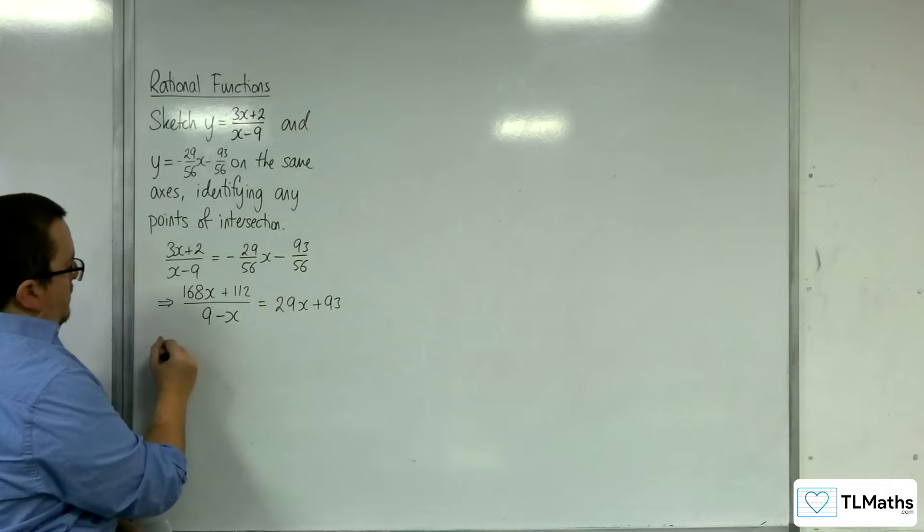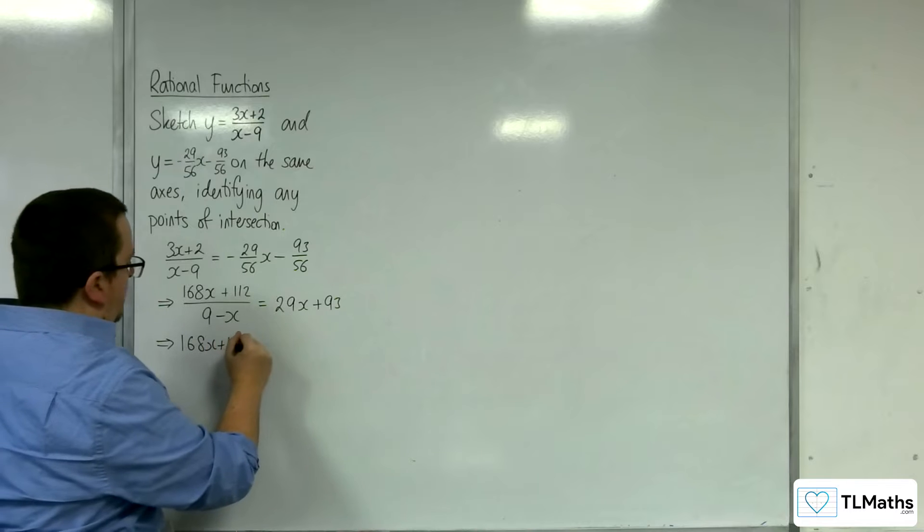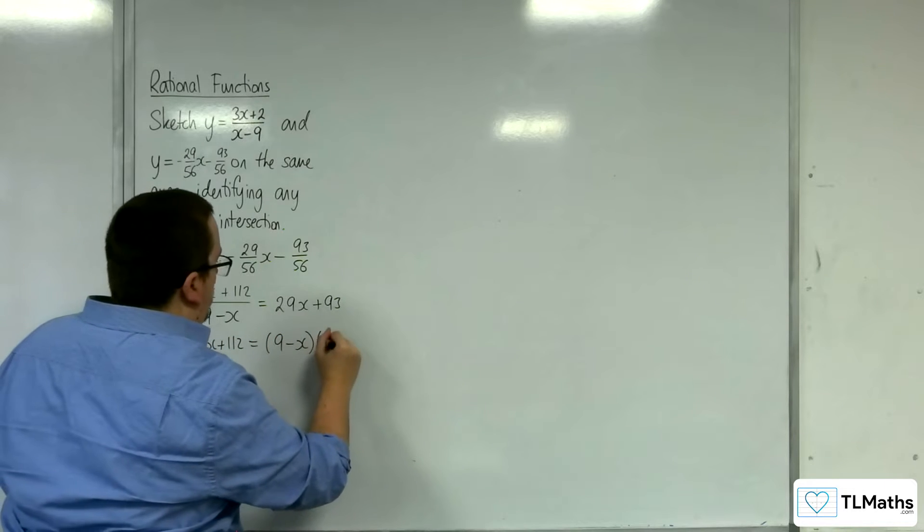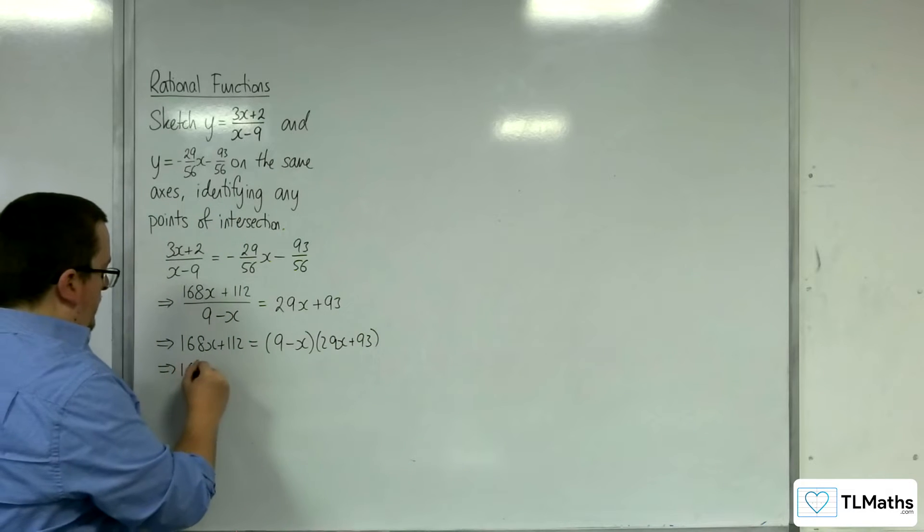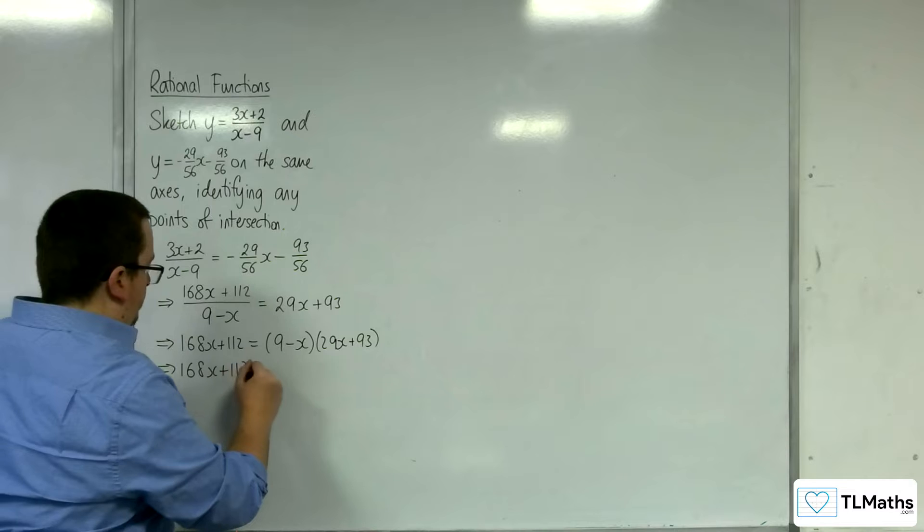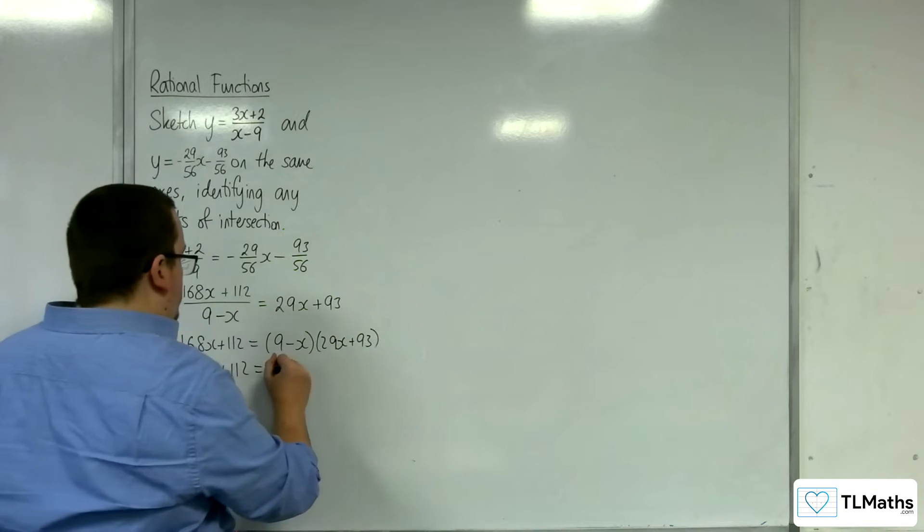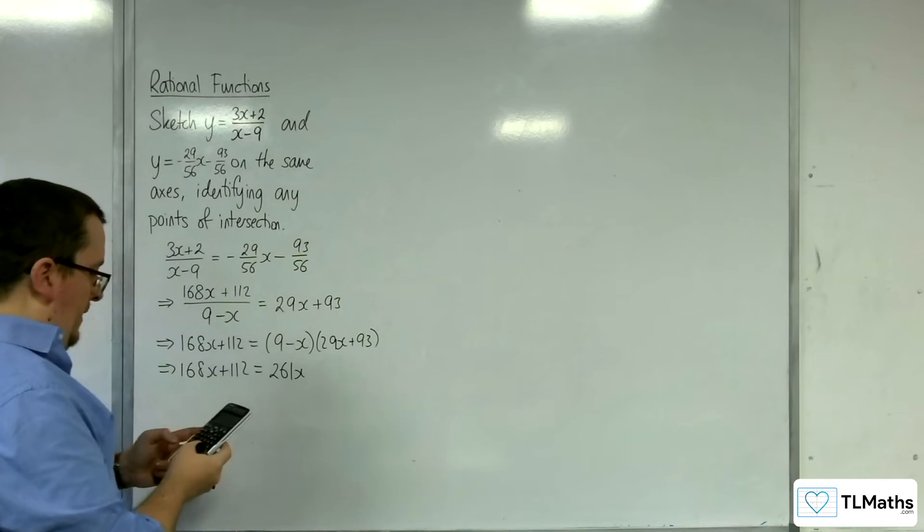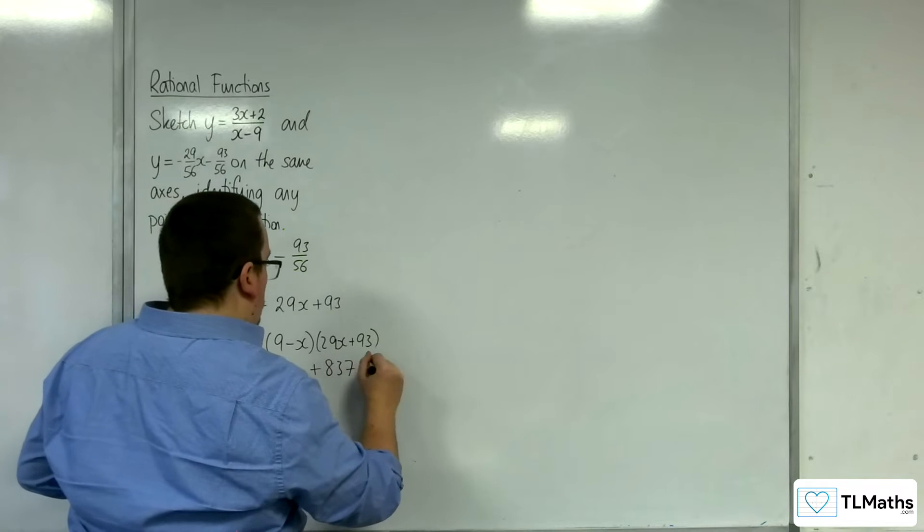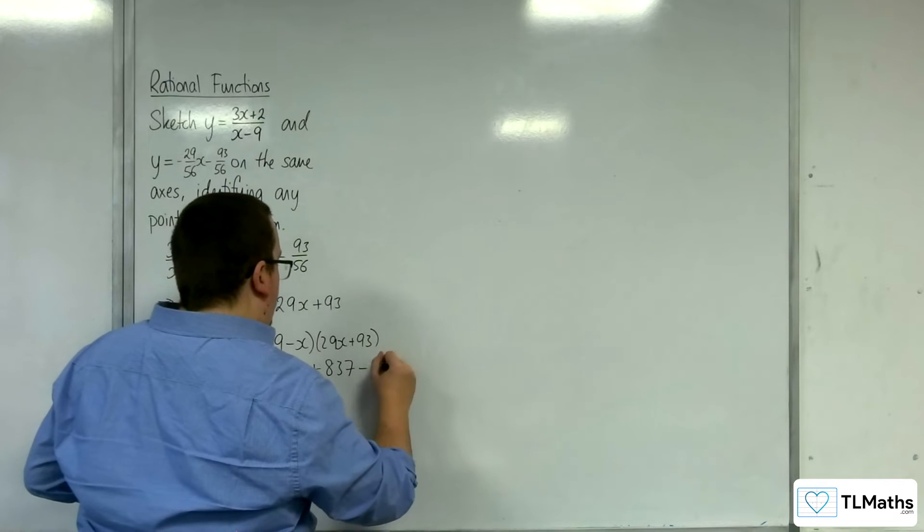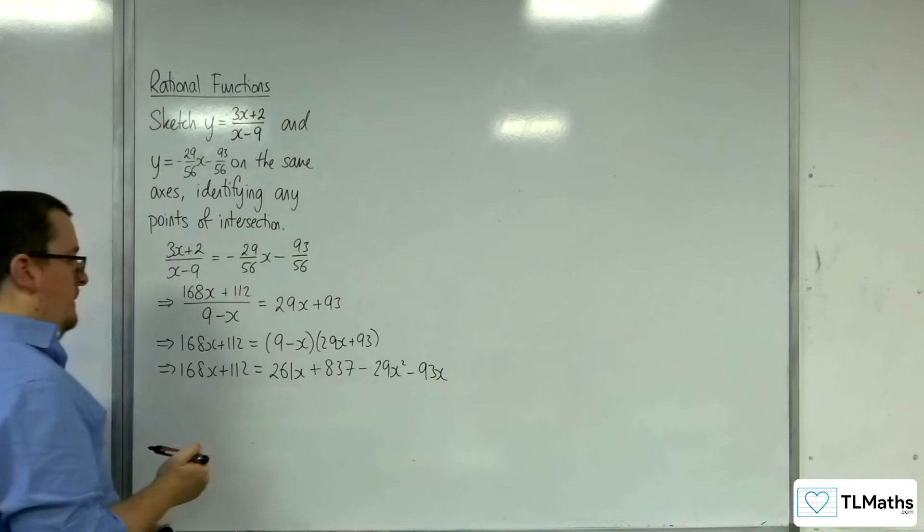So now I'm going to multiply both sides by 9 minus x. So 168x plus 112 is equal to 9 minus x times 29x plus 93. So we've got 9 lots of 29, so 261x plus 9 lots of 93, so 837, take away 29x squared, take away 93x.